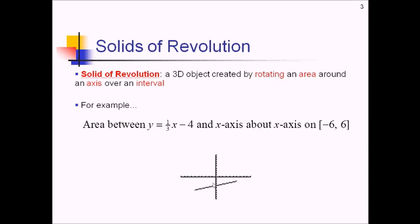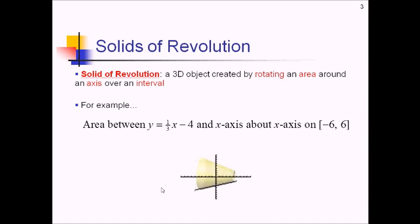Here's what this looks like visually. I'm going to rotate this around the x-axis, and as I do that, it carves out a solid object. This solid object here is our solid of revolution, and we're going to be finding volumes of these things today.